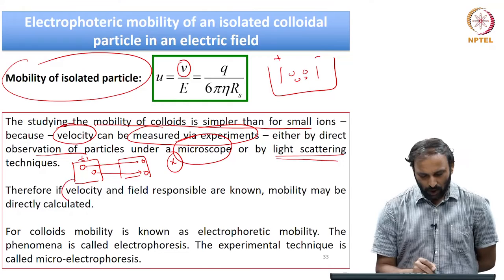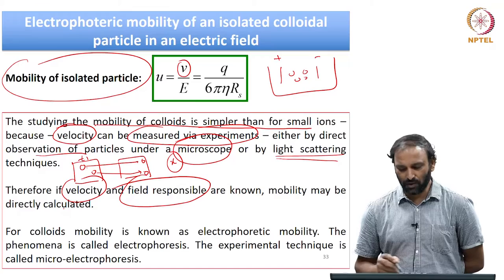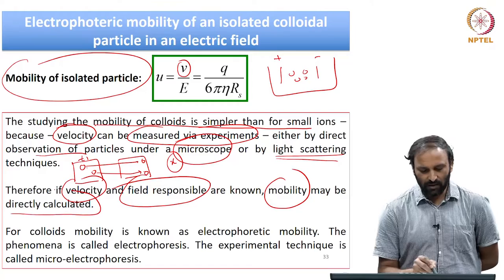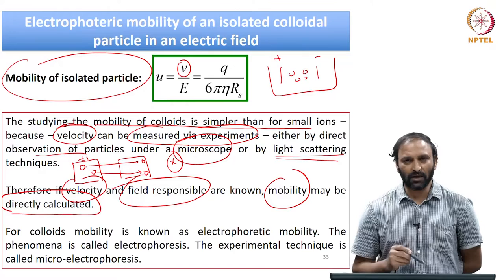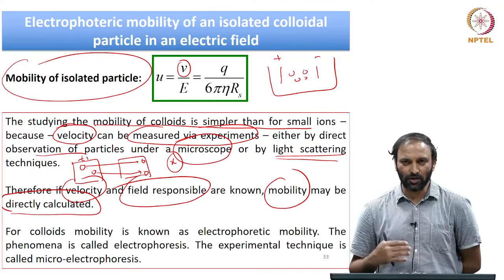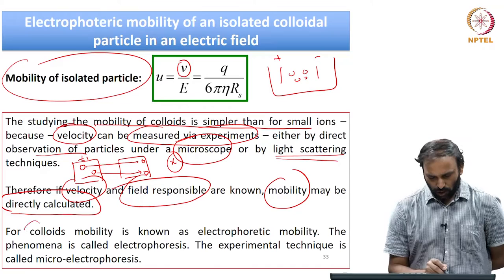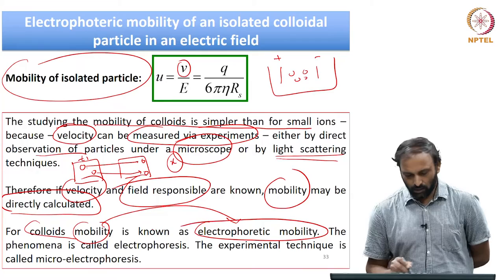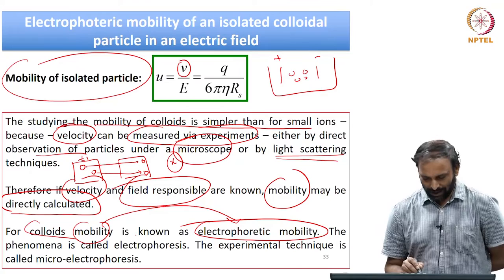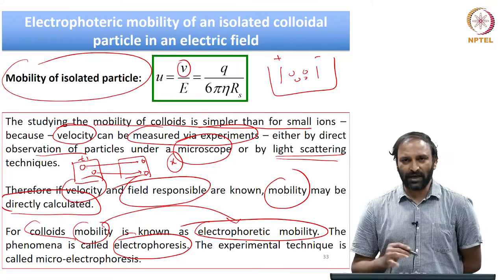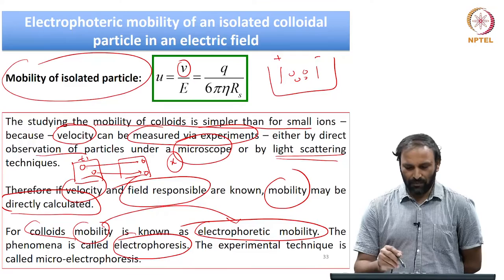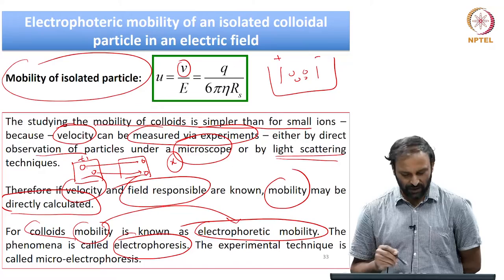Once the velocity and the field responsible for the motion are known, one can calculate the electrophoretic mobility directly from experiments. Therefore, studying electrophoretic mobility of colloidal particles is much simpler than for ions because we can directly visualize the motion in the presence of an electric field. For colloidal particles, the mobility is known as electrophoretic mobility, and the phenomenon is called electrophoresis. Combining microscopy with electrophoresis gives the technique called micro-electrophoresis.